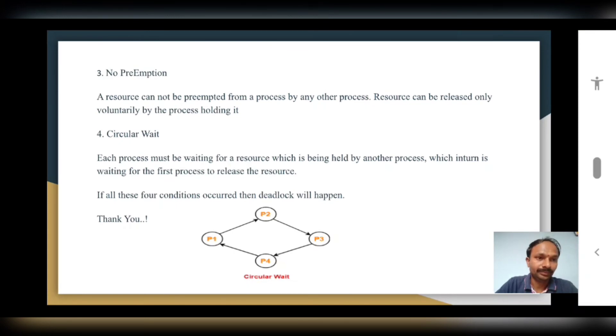No preemption. Now what is meant by preempting a process? Preempting a process is forcefully pausing the execution of that process. And why? Because a higher priority process has come to interrupt that process execution in between.